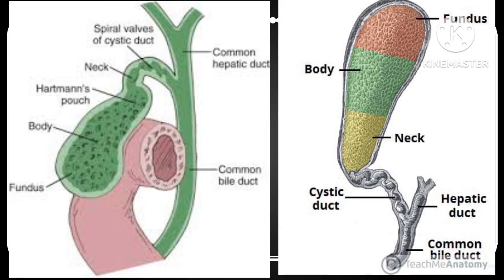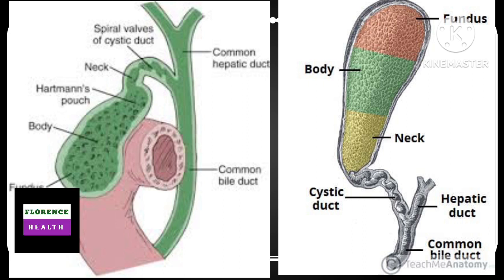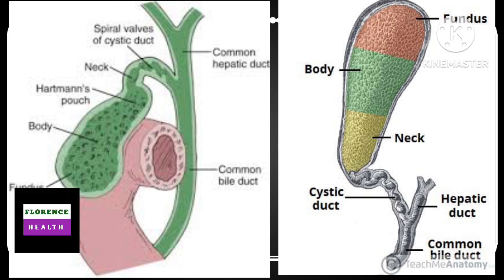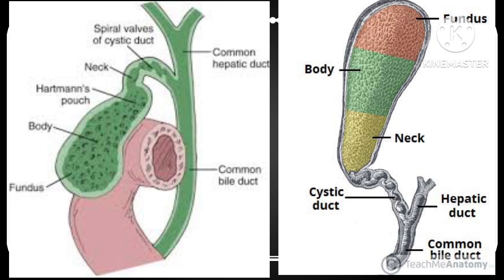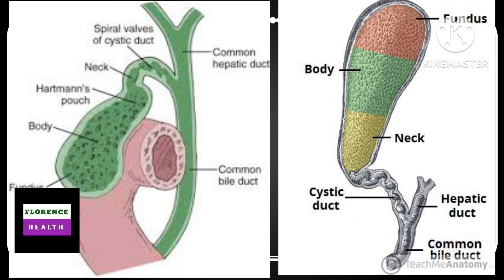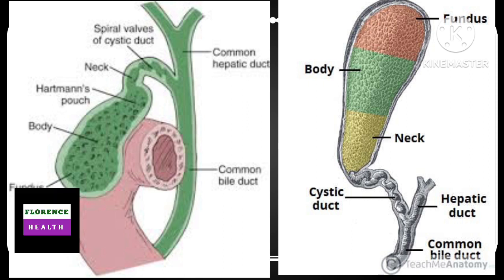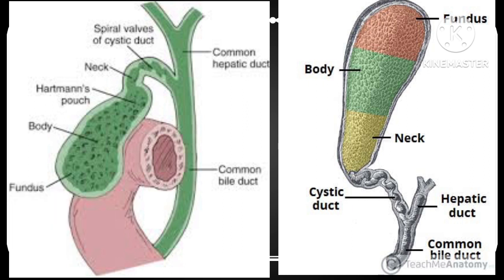The gallbladder has three parts: fundus, body, and neck. In the sitting position, the dependent part is the fundus. In the supine position, the dependent part is the neck. In the semi-recumbent position, the dependent part is the body. This means that in the supine position, the stone inside the gallbladder will move to the neck, while in the sitting position, the stone will move to the fundus.